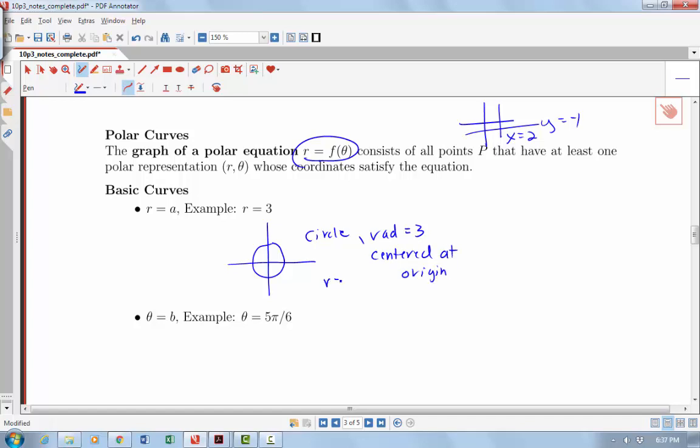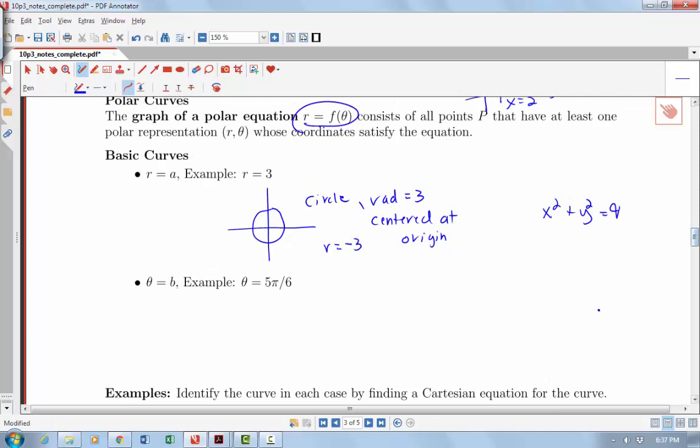r equals negative 3 would also give the same graph. Notice that the Cartesian equation of that sort of graph would be x squared plus y squared equals 9. So for a circle, the polar equation is a much simpler equation. What we're going to start to see here is that for certain kinds of graphs, it's easier to write them in terms of a polar equation than in terms of a Cartesian or rectangular equation.